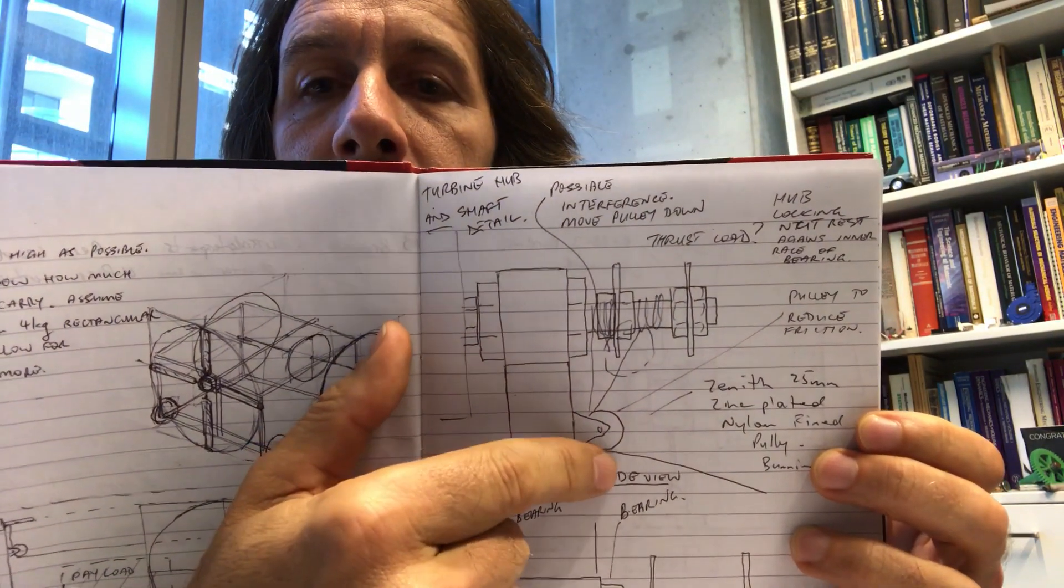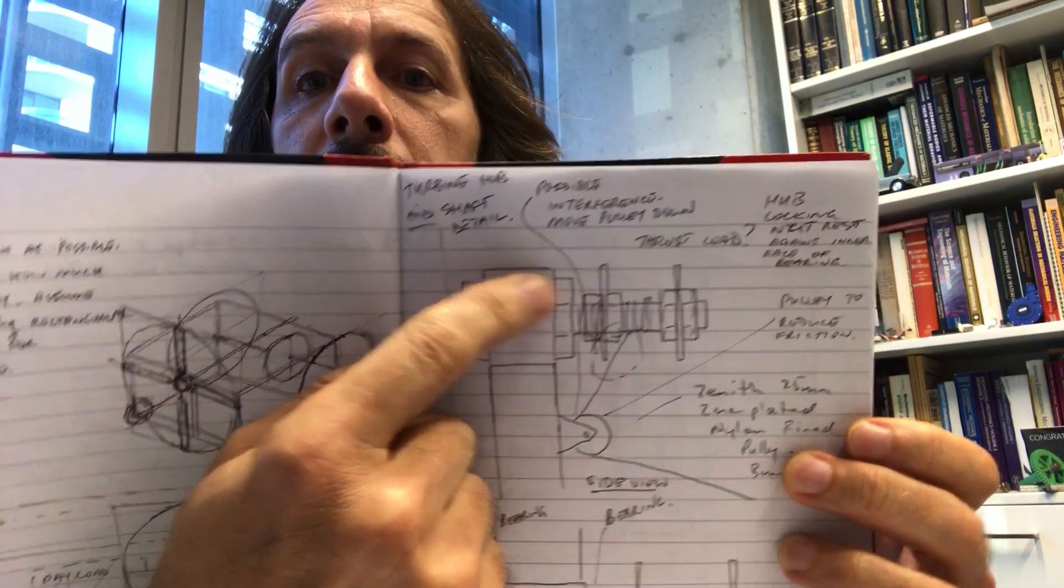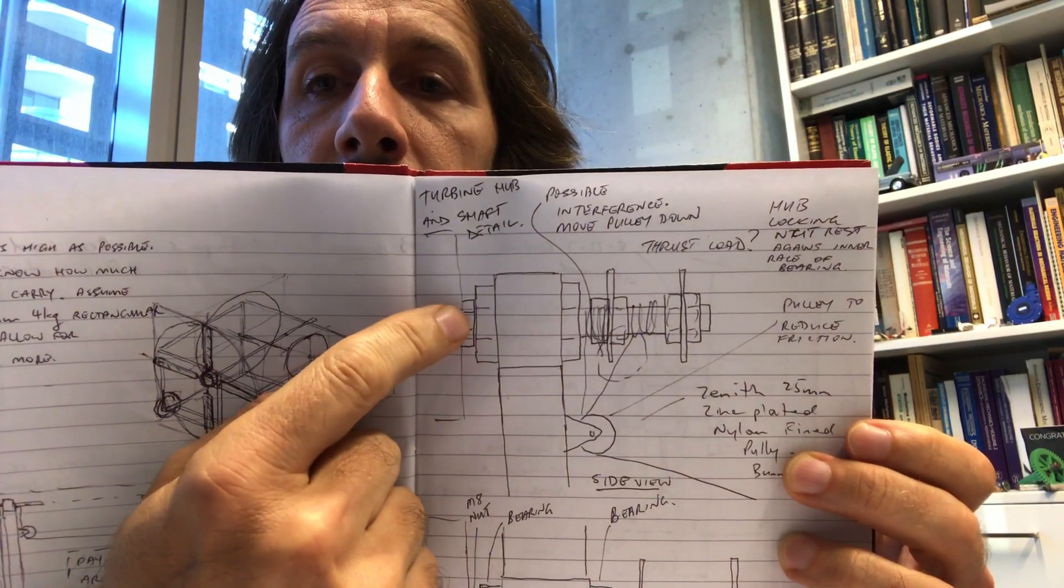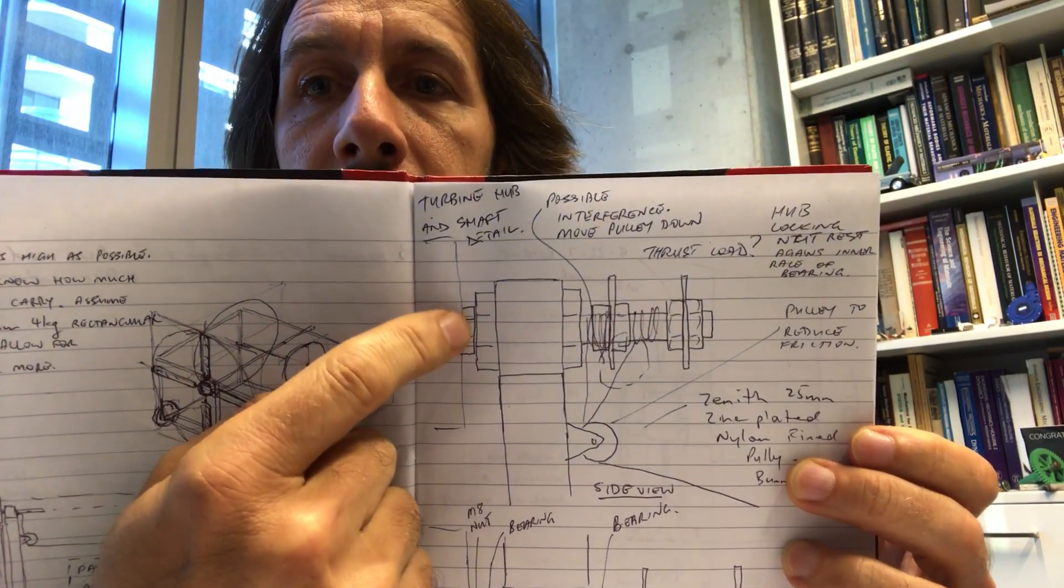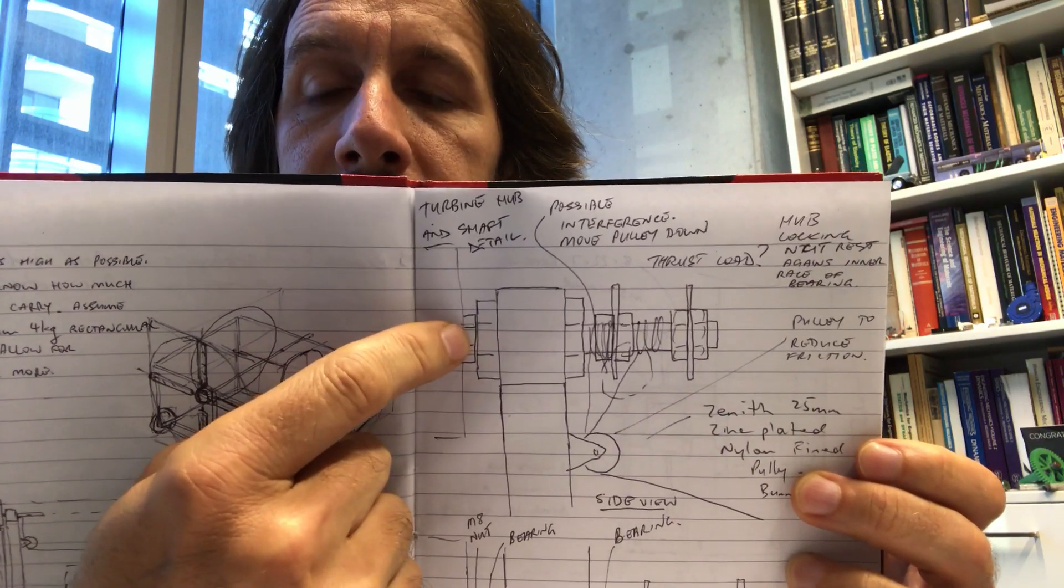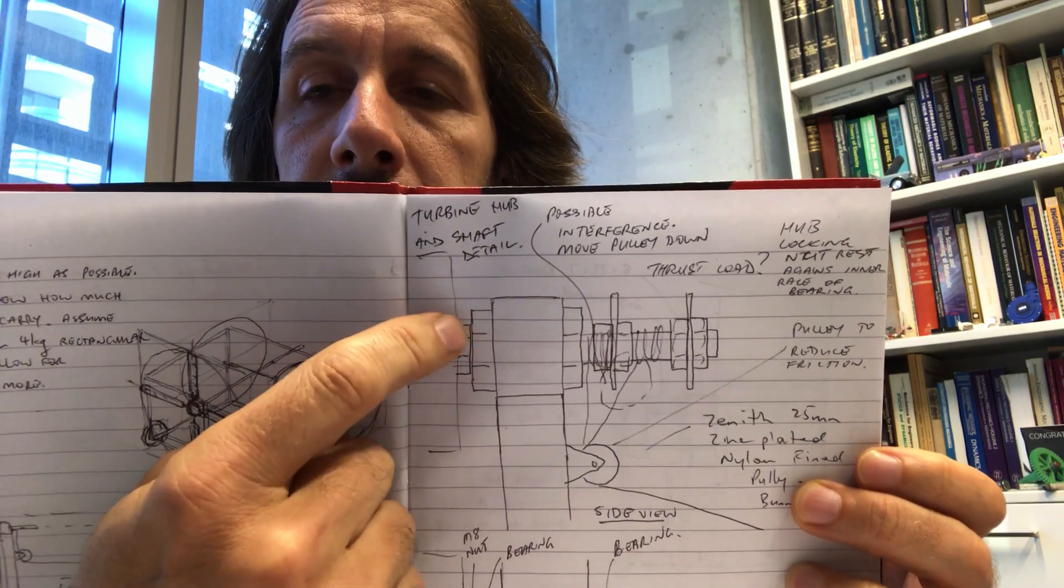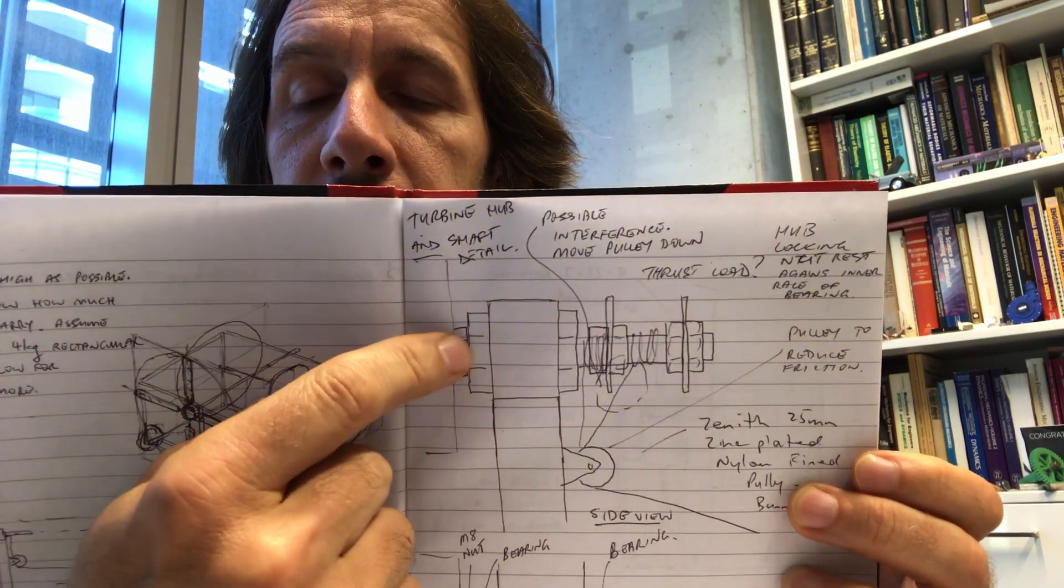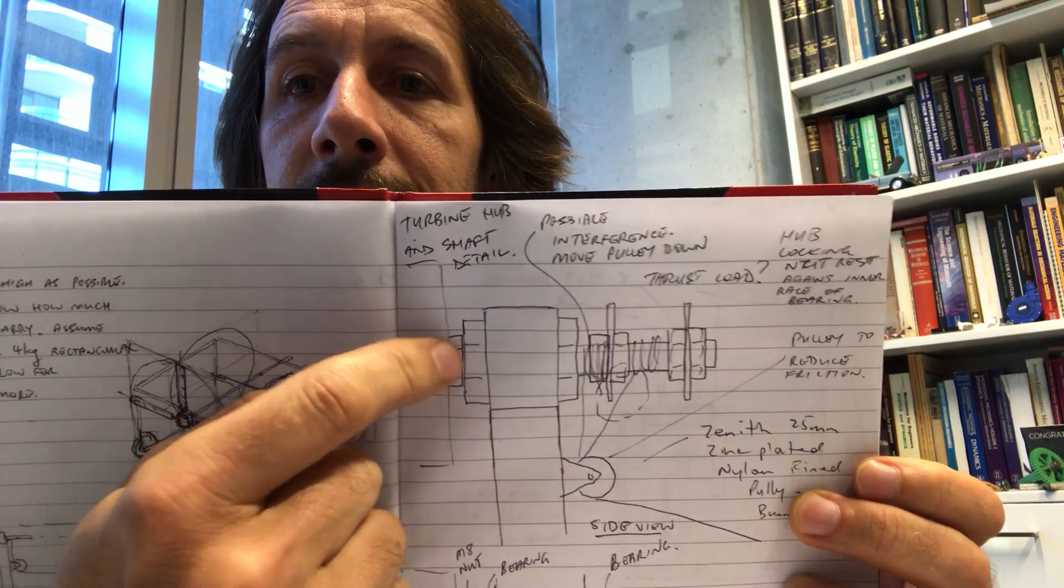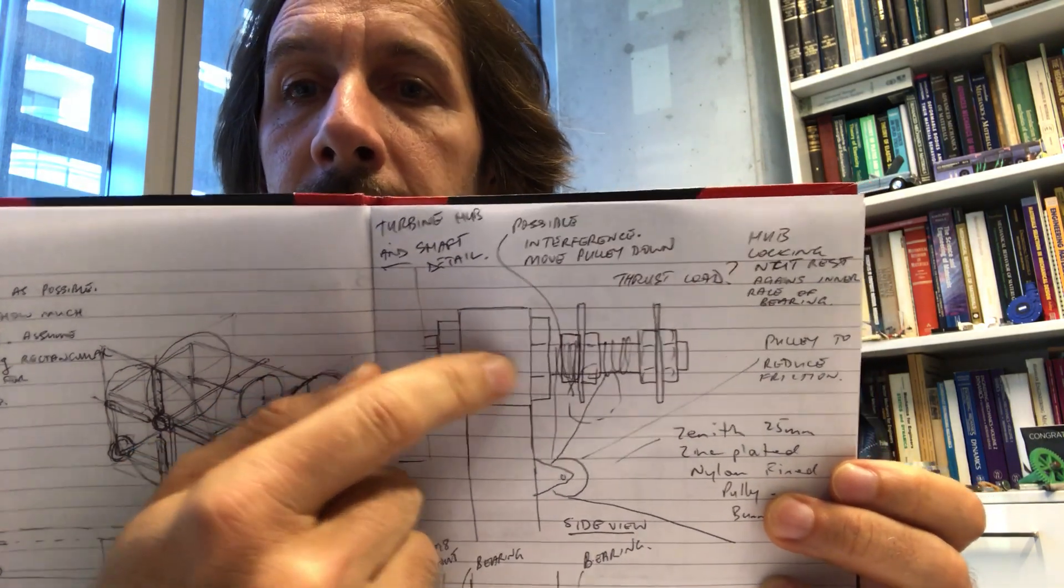And I've put some notes just to remind myself of what I'm doing and to record my thinking. So I've got here, I need to take care of the thrust load, and the way I can do that is with this washer here, sorry not washer, this nut that we can use to lock the back of the hub that can be acting against or resting against the inner race of the bearing. And then so the bearing's radial, sorry axial load capacity will take care of the thrust load and we get no friction generated due to that contact there.